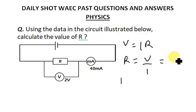We have our value of voltage here to be 2, and the value of I is 40 milliampere. That is 40 times 10 raised to the power minus 3. 40 times 10 raised to the power minus 3, that's the milliampere.